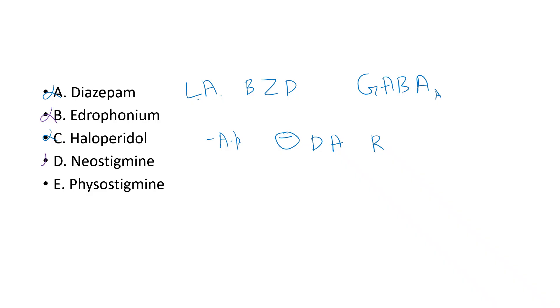Edrophonium and neostigmine are wrong because they are quaternary amines. The answer is physostigmine.